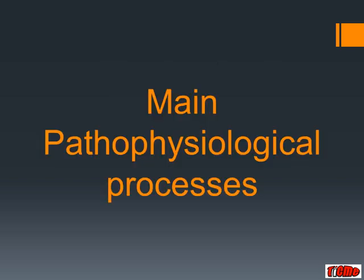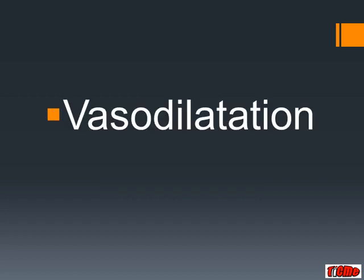So we know how the process starts. What do all these mediators together lead to in the body? The first and one of the most important processes is vasodilatation, mediated by nitric oxide. Vasodilatation happens all over the body, and it also causes the gap junctions between cells to open up, which allows fluid to leak out.